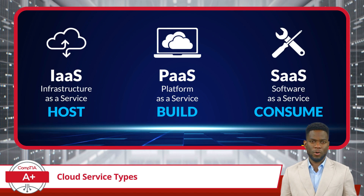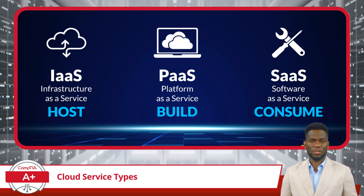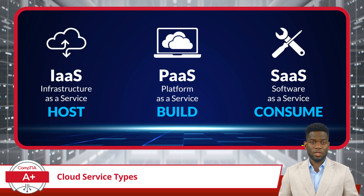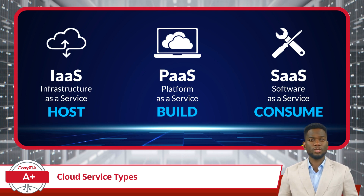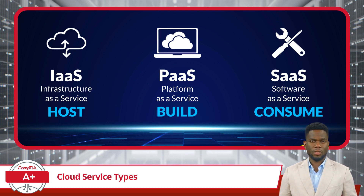Cloud services fall into three primary categories – infrastructure as a service or IaaS, platform as a service or PaaS, and software as a service or SaaS. These service types represent distinct levels of abstraction and functionality, each offering unique benefits and use cases. Let's explore each of these service types in detail to gain a comprehensive understanding of their functionalities and advantages.